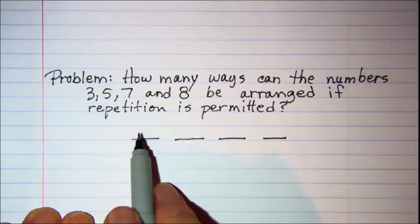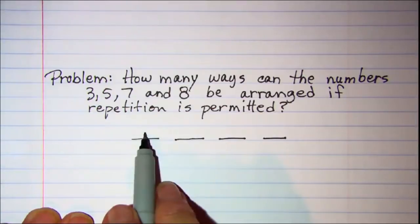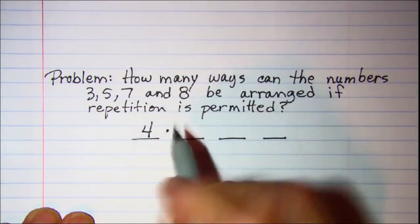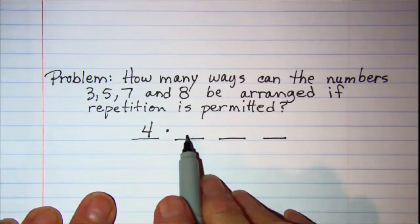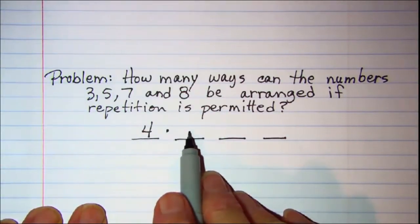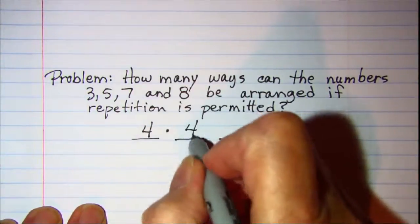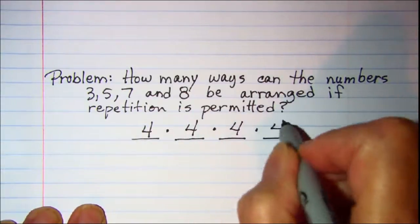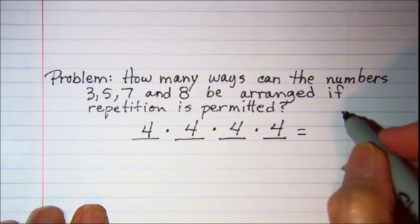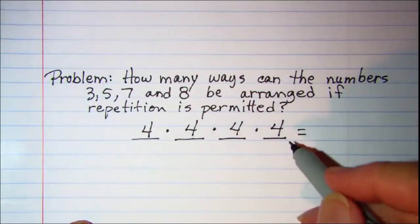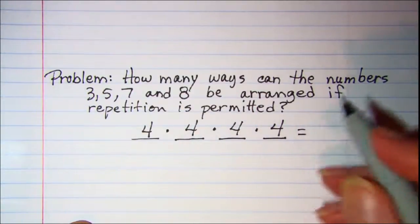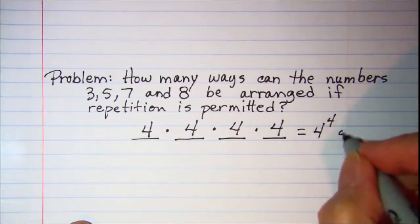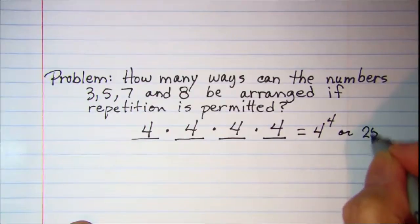So I have four ways that I can fill this first spot. And then since I'm allowed to repeat the numbers I have four again for this spot. And likewise here and here. So by the fundamental counting principle we multiply those number of ways together. This is four to the fourth power which is 256.